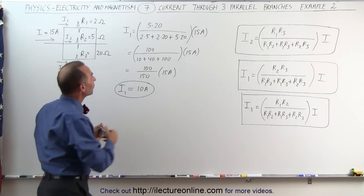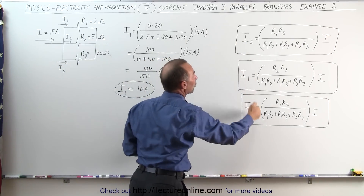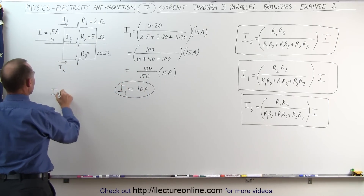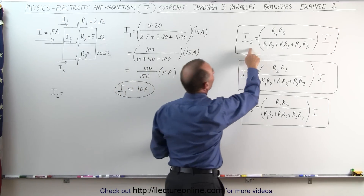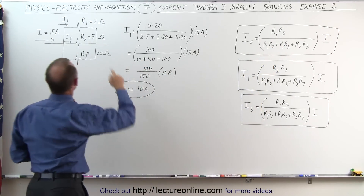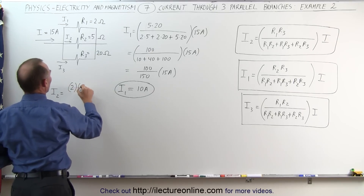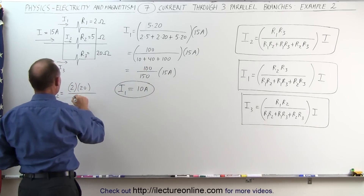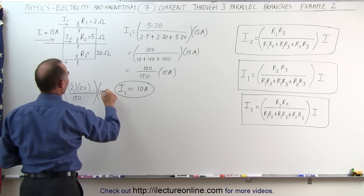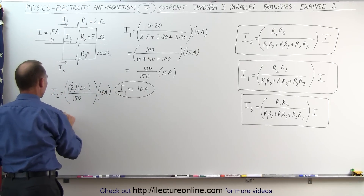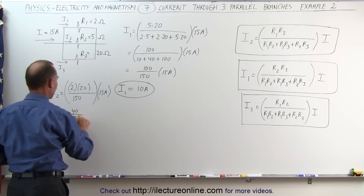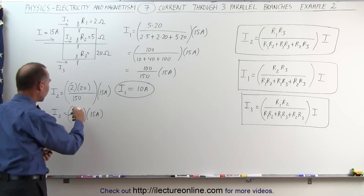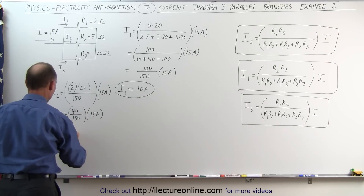Now that we have the value of the denominator, that will be the same for all three equations — notice that the denominator is identical in all three equations. Now we can say that I2 is equal to the product of the two resistors in the other two branches, R1 and R3, so that would be 2 times 20, divided by 150, multiplied times 15 amps. I2 will be equal to 40 divided by 150 times 15 amps, and 15 divided by 150 is one-tenth, so one-tenth times 40 is equal to 4. Therefore, I2 is equal to 4 amps.